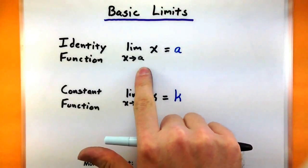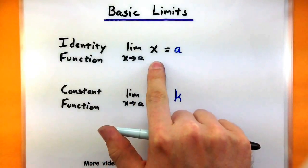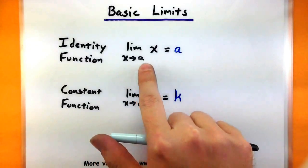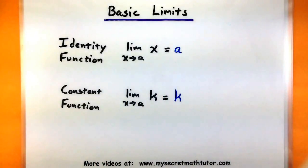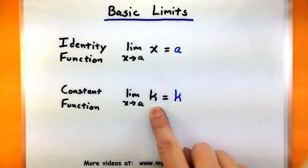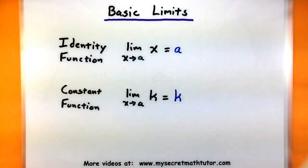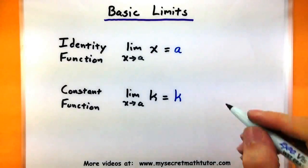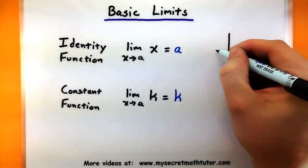So in the first one, it says that if you're taking the limit of the identity function x as x approaches a value a, you essentially get a. For a constant function, as you take its limit as x approaches a, you get k. To understand both of these limits and how they work, it's probably best to look at their graphs.